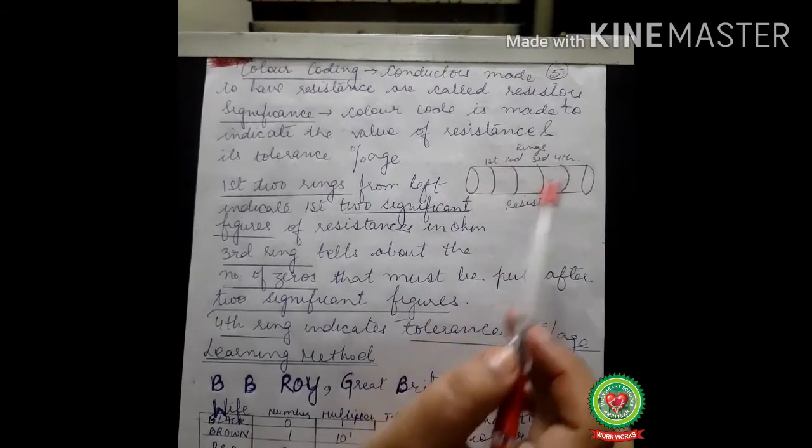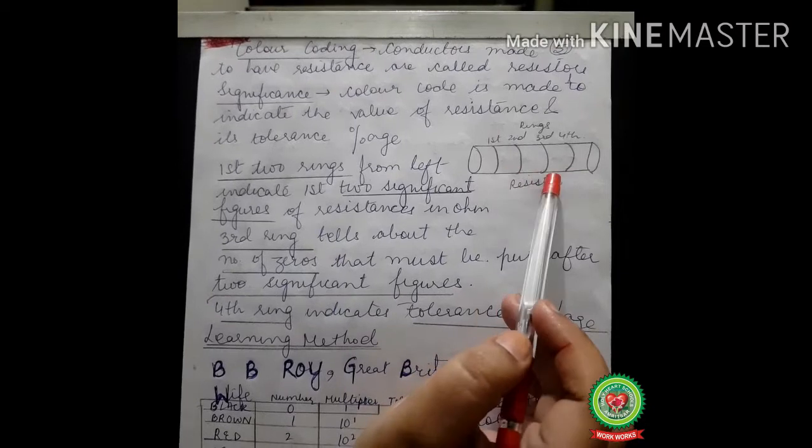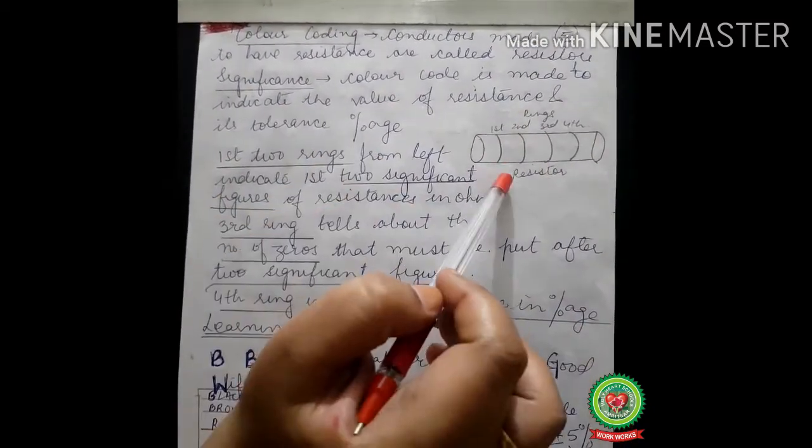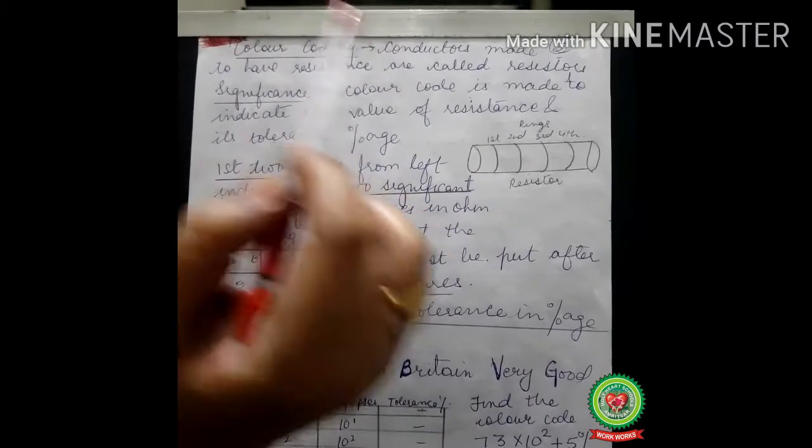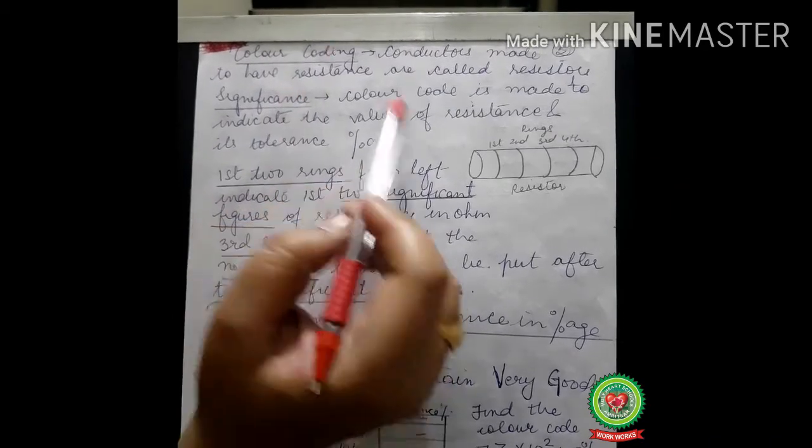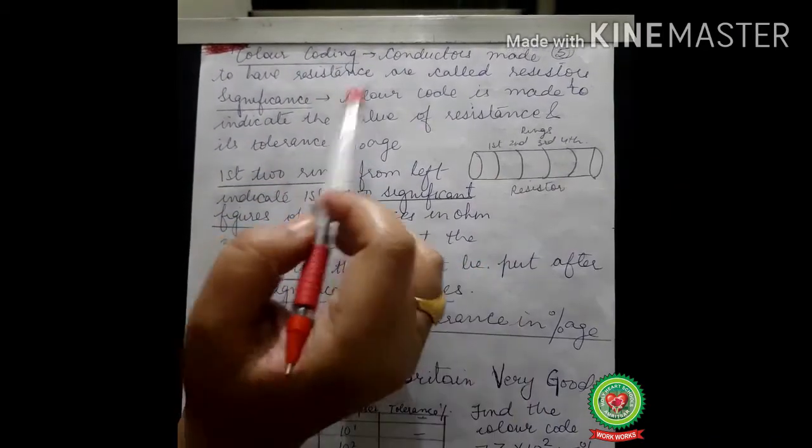We say they are being coded with a color, so that is color coding. It does not have a proper definition, so we shall be discussing like this only. Now the significance of this coding of colors...